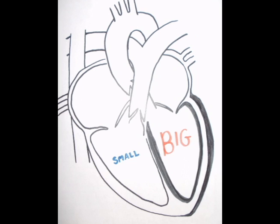Second, veins bring blood back to the heart. And third, the left ventricle is larger than the right ventricle because it has to pump blood to the entire body, while the right ventricle only pumps blood to the lungs.